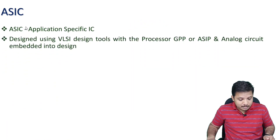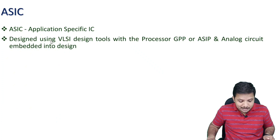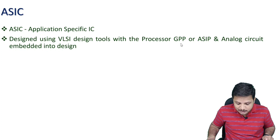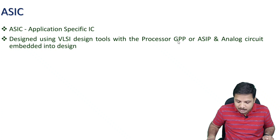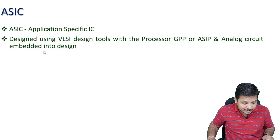We use application-specific ICs because we don't want to overload the general-purpose processor in the system. If you have a very complex system with a particular assignment of work, executing it via an application-specific IC lowers the load on the main processor. Application-specific IC is designed for specific applications using VLSI design tools with a processor — either general-purpose or application-specific.